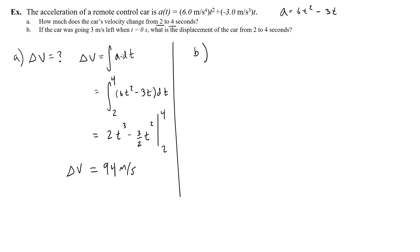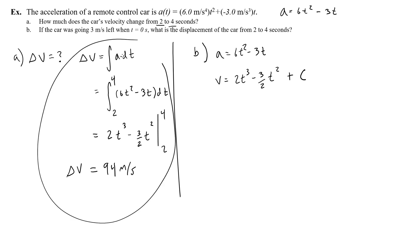Now part B: if the car was moving 3 meters per second to the left when t equals 0, why do I need to know that? When I took the antiderivative of the acceleration equation — 6t-squared minus 3t — I found the velocity function: 2t-cubed minus three-halves t-squared. But when you take the antiderivative, you're always missing the constant of integration. That constant would cancel when finding change of velocity, but now that I want displacement from 2 to 4 seconds, I need to know the constant of integration for the velocity function.